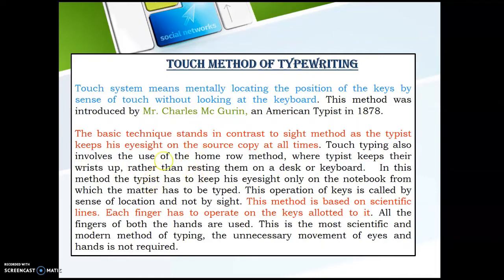Touch typing also involves the use of the home row method, where the typist keeps their wrists up rather than resting them on the desk or keyboard. All fingers should be in the home row position. In this method the typist keeps eyesight only on the copy from which the matter has to be typed — this operation of keys is by sense of location, not by sight. This method is based on scientific lines, as each finger has specific keys allotted to it.